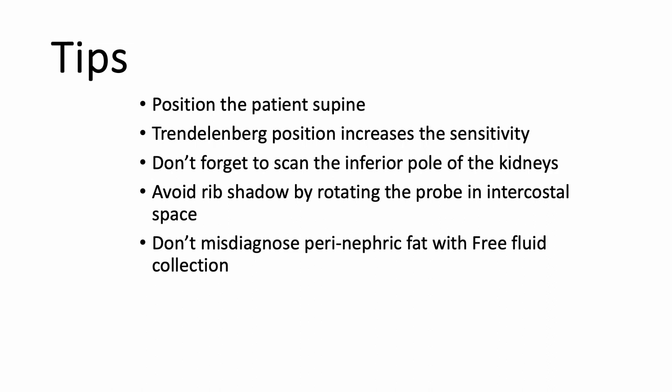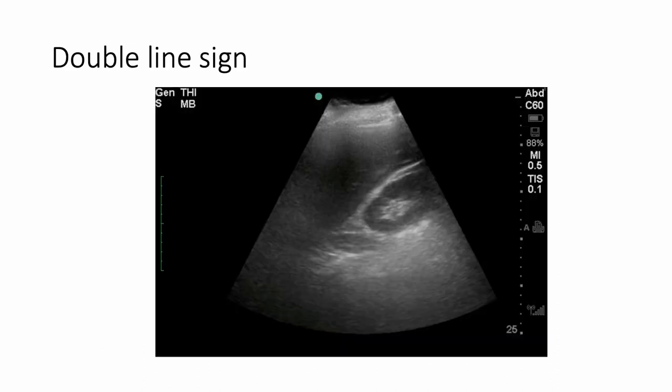Tips for the right upper quadrant scan: the patient needs to be in the supine position, and to increase sensitivity you can place the patient in the Trendelenburg position. Don't forget to scan the inferior pole of the kidney. When using the curvilinear probe, rib shadows can sometimes obscure part of the view — to avoid this, do a minimal rotation of the probe to fit the footprint between the ribs for a better image. Sometimes you may misdiagnose perinephric fat as a free fluid collection. There is a famous sign called the double line sign: if you see two white lines — the capsule of the liver and capsule of the kidney — with a triangle in between, this represents perinephric fat, not free fluid.